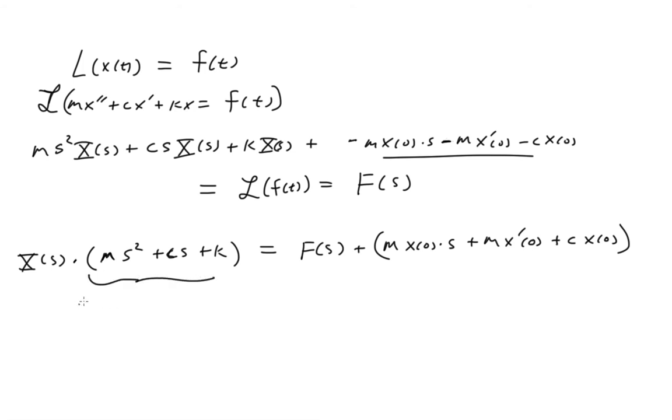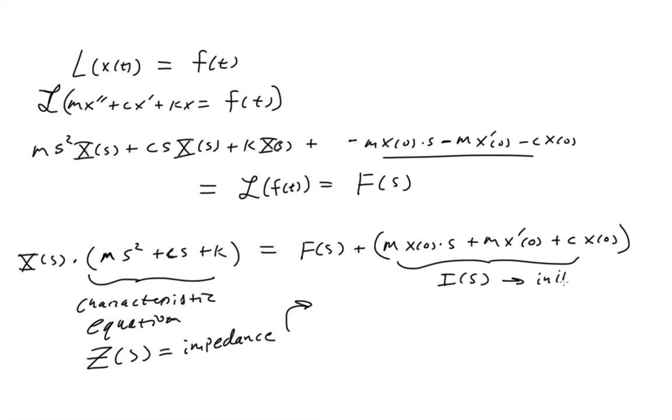So what we see here is this is actually the characteristic equation, and I'm going to give that a name. That's what I'm going to call Z(s). It's called the impedance. And I'm going to call the other part I(s), and it represents initial values.